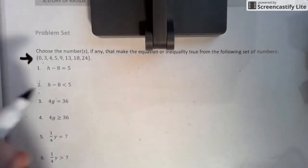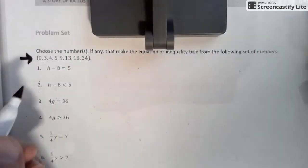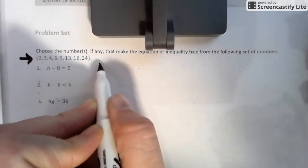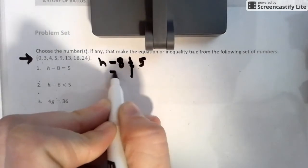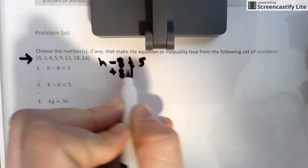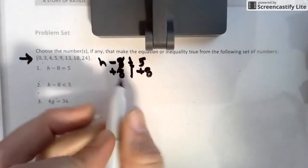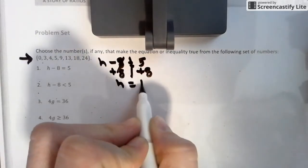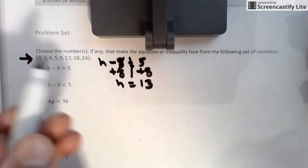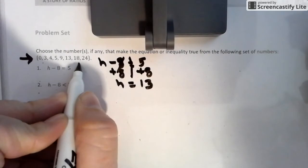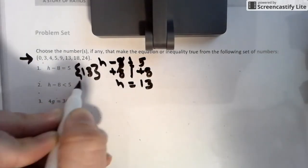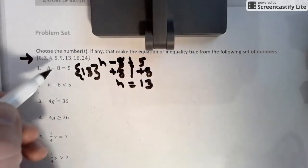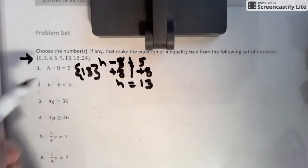So if we treat this like a step equation like you had before, we could treat it as H minus eight equals five. Instead of taking it away, we're going to add eight, keeping it balanced. So H has to be 13. So is 13 an option there? Yes. So the solution to this one is 13 only because it is an equal sign. So it has to be one answer that makes this happen. So that's that one.